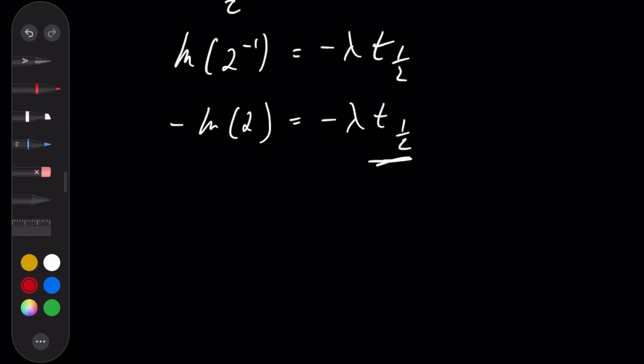We're just going to go ahead and ignore the minus signs, because they're both negative. And we're going to rearrange. So we're going to say t one half is equal to ln 2 over lambda.